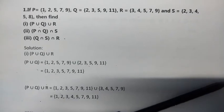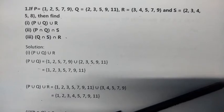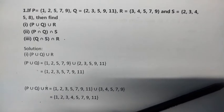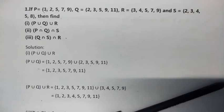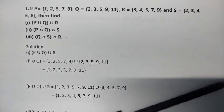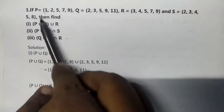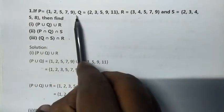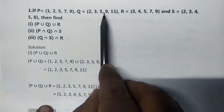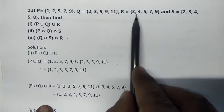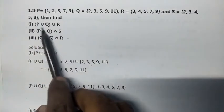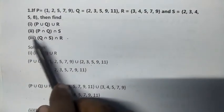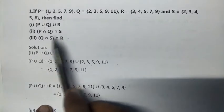Hi students, welcome to SAC Mathematics. Today, 9th standard mathematics, Exercise 1.4. If P = {1, 2, 5, 7, 9}, Q = {2, 3, 5, 9, 11}, R = {3, 4, 5, 7, 9}, and S = {2, 3, 4, 5, 8}, then find: (i) P union Q union R, (ii) P intersection Q intersection S, (iii) Q intersection S intersection R.